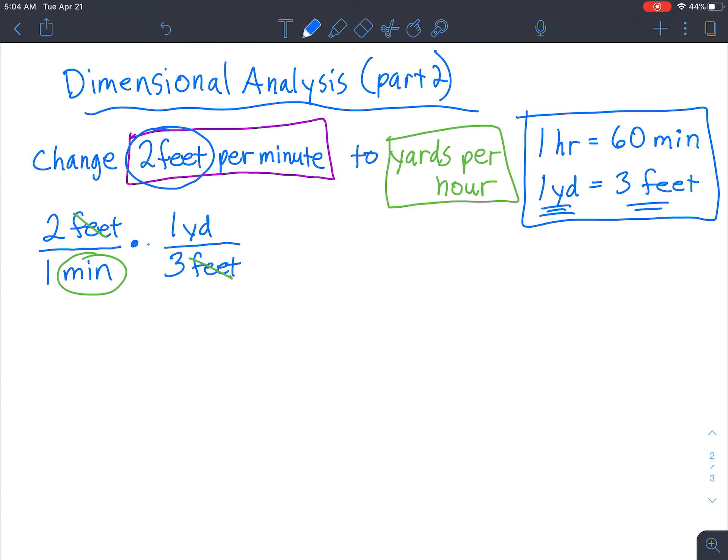We want to change minutes to hours. And so we're going to say 60 minutes has to be diagonal from this part right here. So I'm going to put 60 minutes on top. And that's the same as one hour. Let's just double check that these are going to cross out. We've got minutes over here on the lower left, minutes over here on the upper right. And we're left with yards per hour, which is what we want.